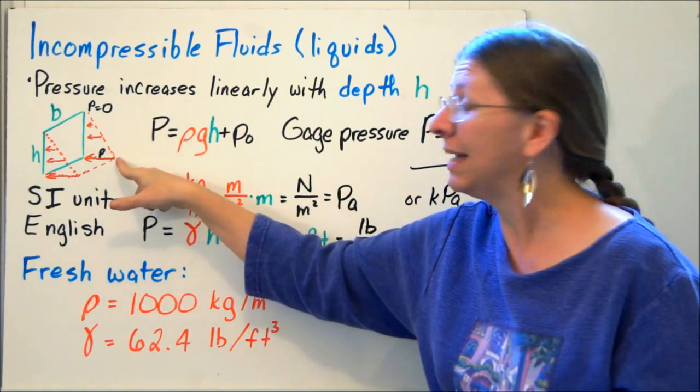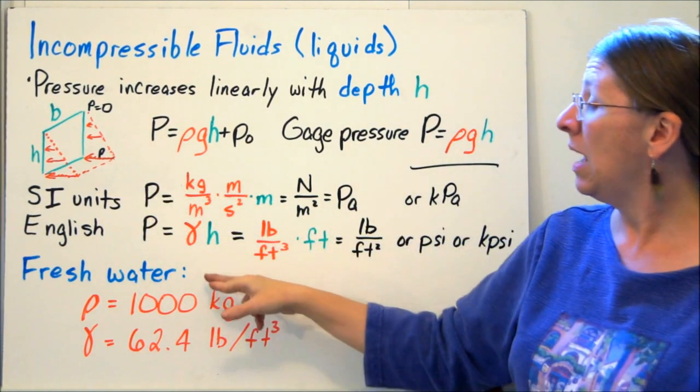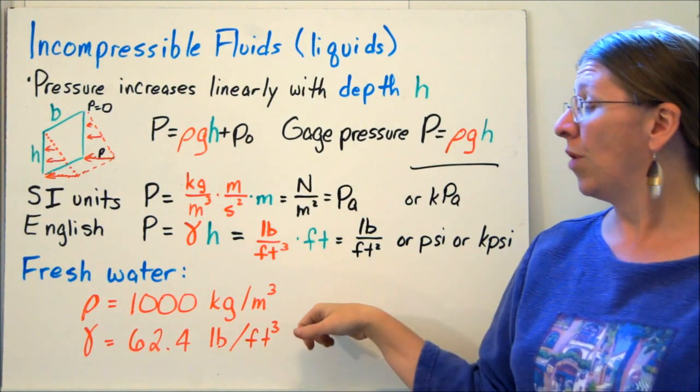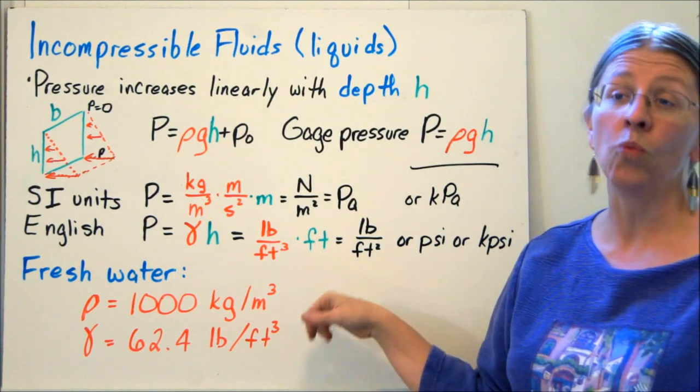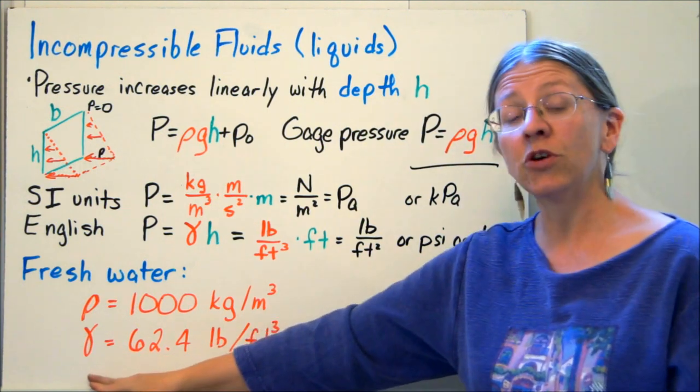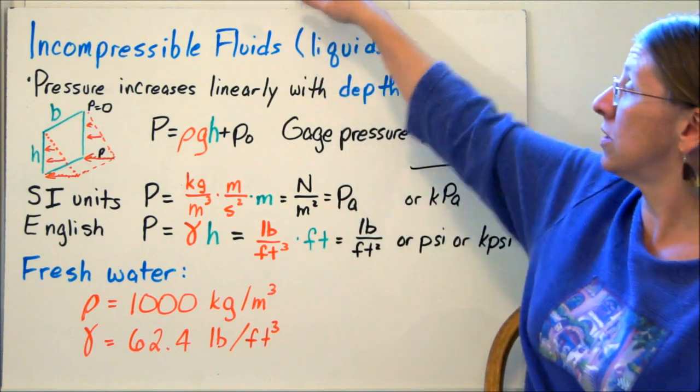In freshwater, there are a couple numbers that you need to have in mind. Rho is a thousand kilograms per meter cubed, or one megagram per meter cubed. The specific gravity of freshwater is 62.4 pounds per foot cubed. You need to memorize those two.